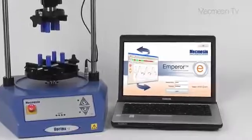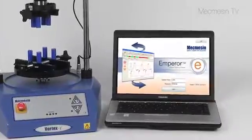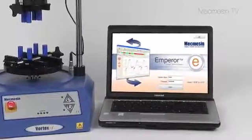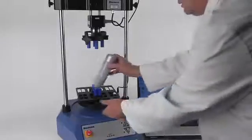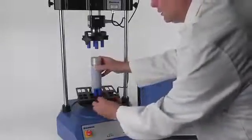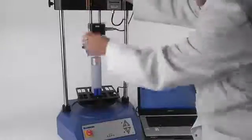At the heart of the Vortex Eye system lies Emperor software, which controls the movement of the mounting table, collects and stores the data, calculates the required results and prints reports the way you want to see them.